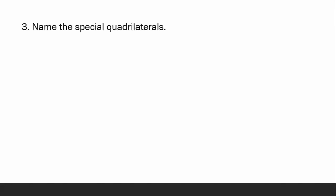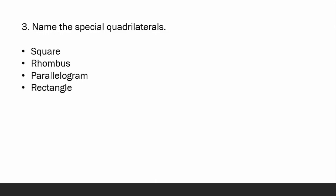Name the special quadrilaterals. We have square, rhombus, parallelogram, rectangle, and trapezoid. So we have these five special quadrilaterals.